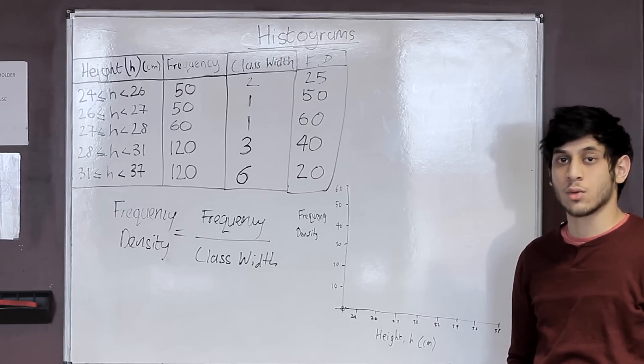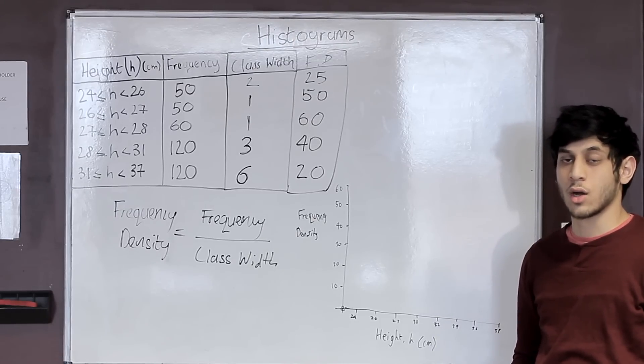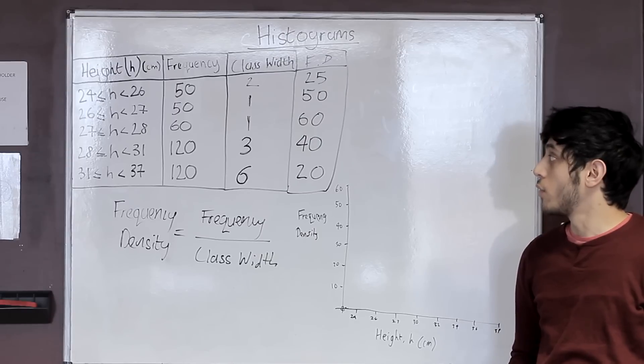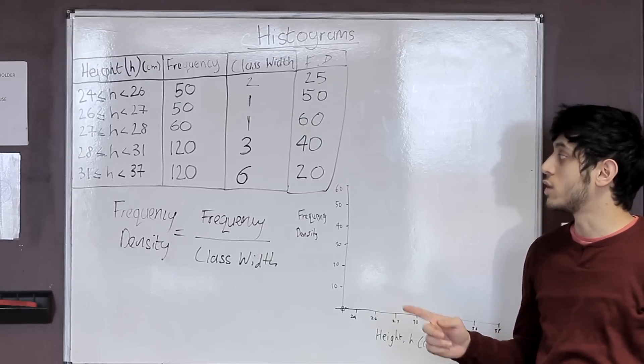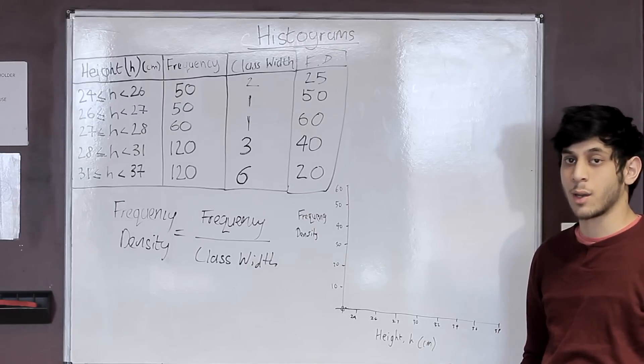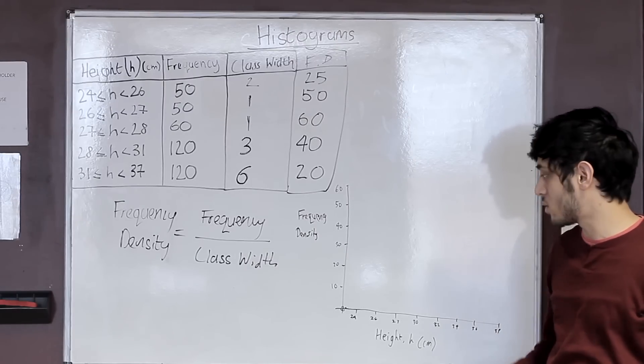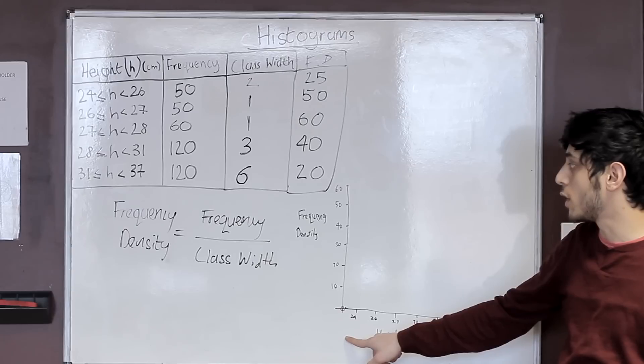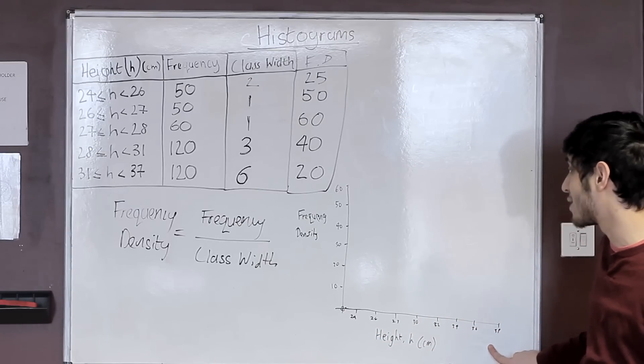Now that we've got our table completed we can use that onto our graph. The two things we need for our graph are the class interval which is our height and the frequency density. The frequency density will be going on your y axis and your class interval from 24 all the way to 37 will be going on your x axis.